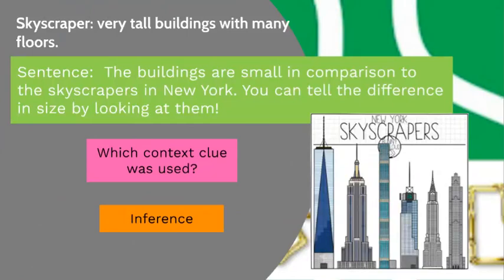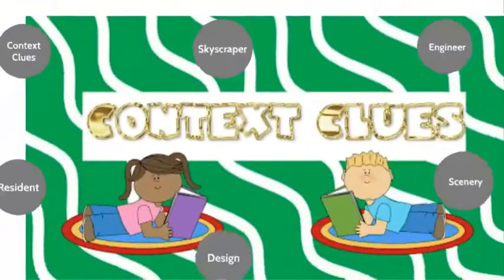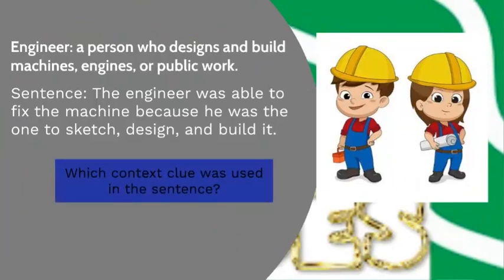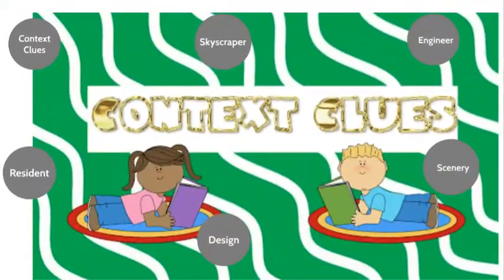The second word is 'engineer.' An engineer is a person who designs and builds machines, engines, or public works. Here's a sentence: 'The engineer was able to fix the machine because he was the one to sketch, design, and build it.' Which context clue did I use? Well done to the students who said examples — an engineer sketches, designs, and builds. These are examples of an engineer's work.